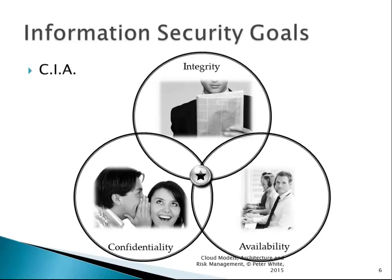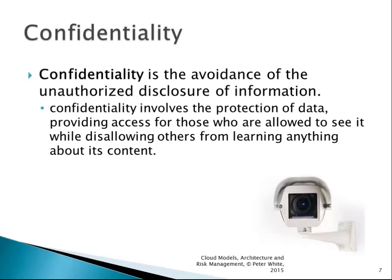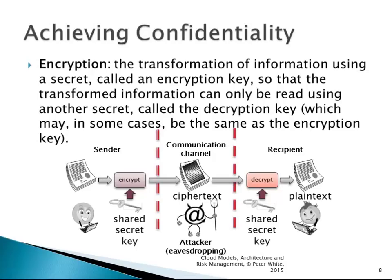For confidentiality, what we're looking at is the avoidance of unauthorized disclosure — we don't want people to access it if they're not allowed to see it. To achieve that, we often use encryption. This is the transformation of information using a secret encryption key so that the transformed information, which we call the cipher text, can only be read by another secret — the decryption key — which in some cases can be the same as the encryption key.